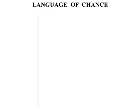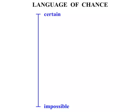In this lesson we look at the language of chance. A good way to consider this is to draw a scale, where down the bottom is impossible and up the top is certain. We can say that any chance is somewhere between an impossibility or a certainty.